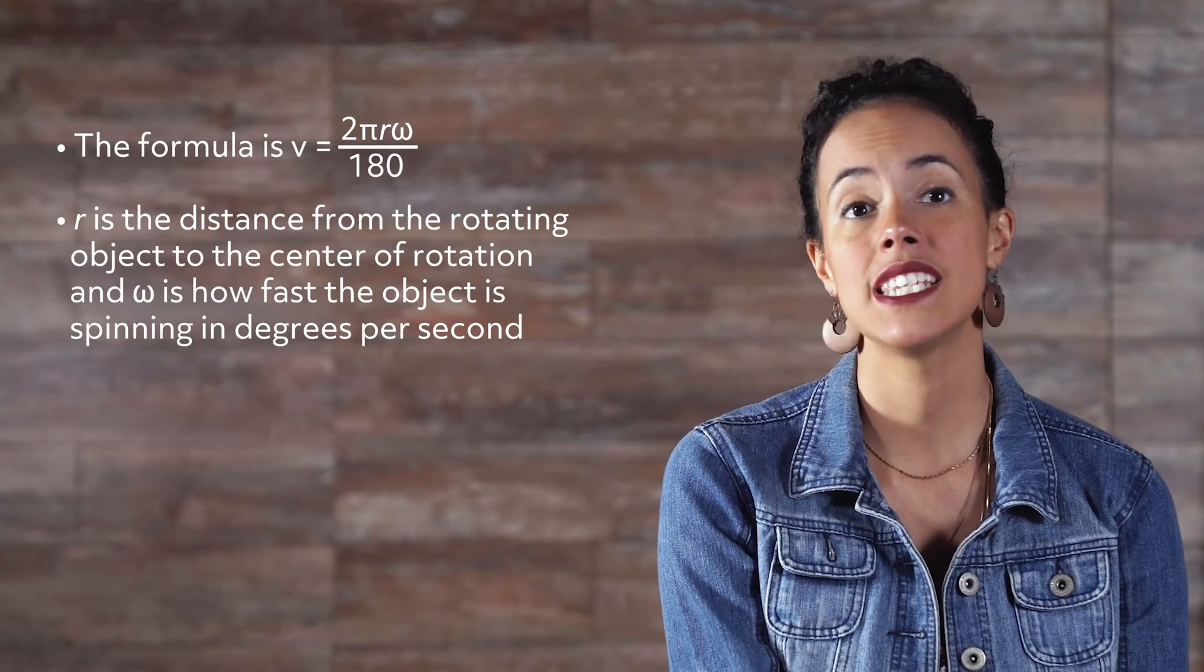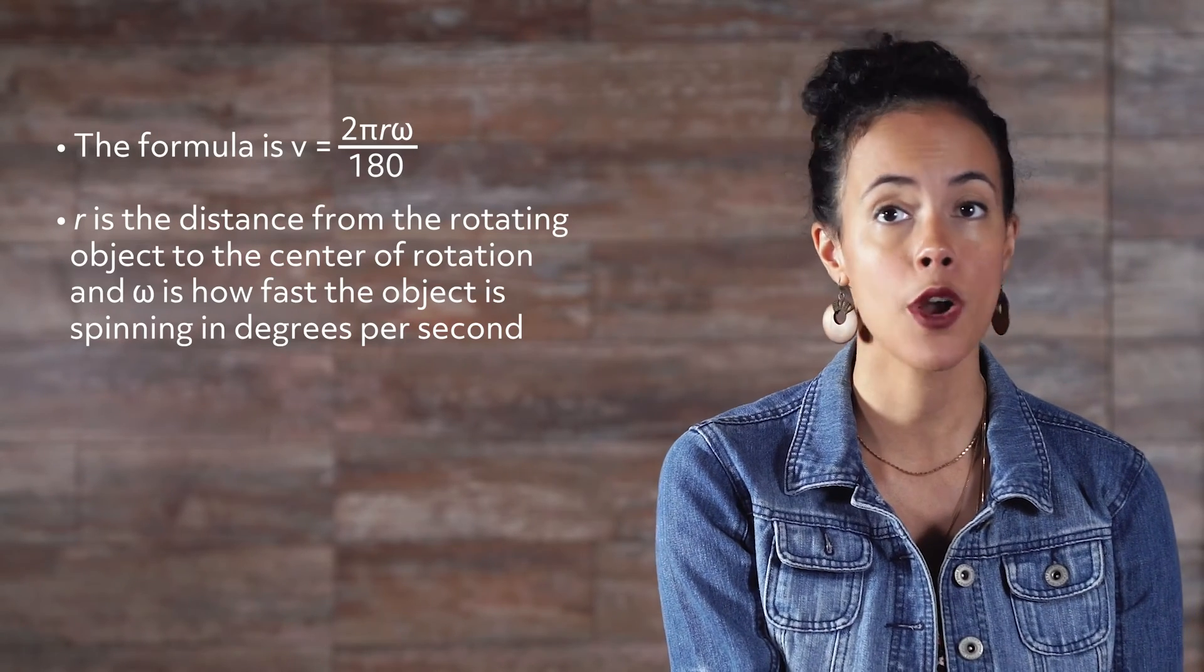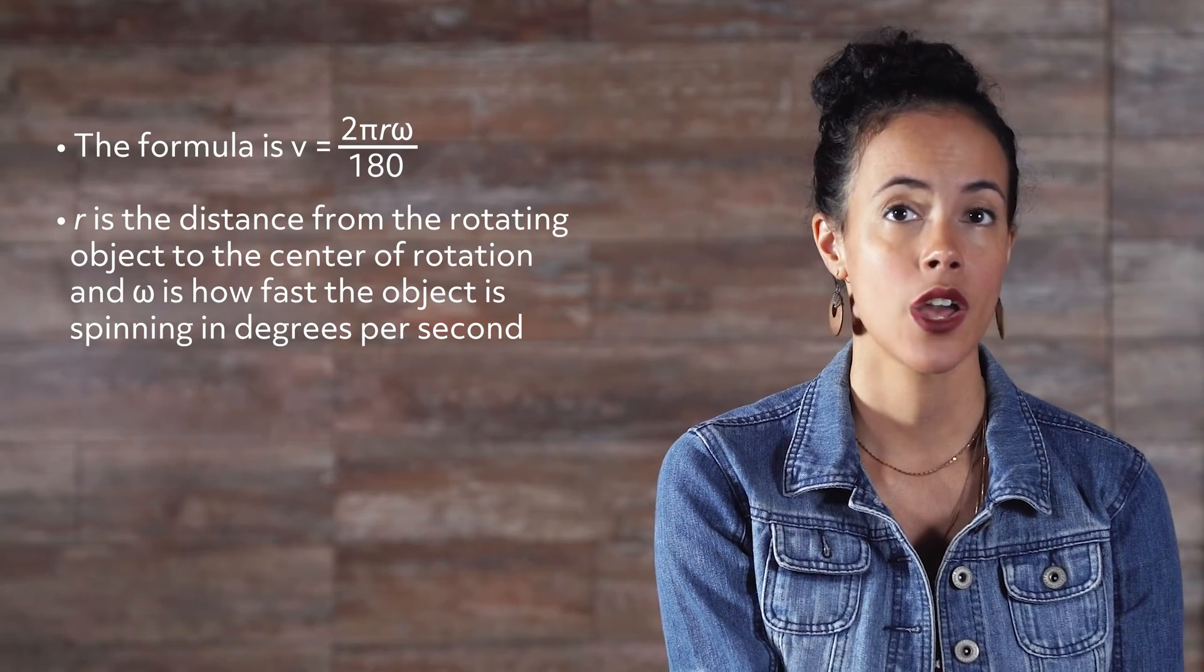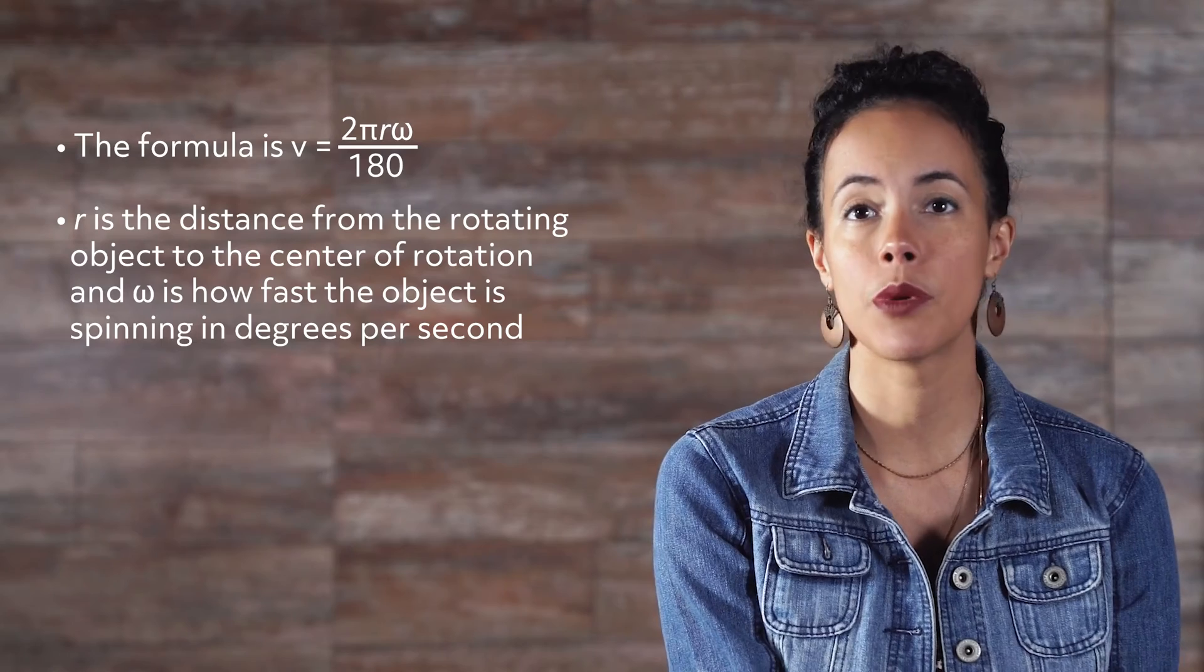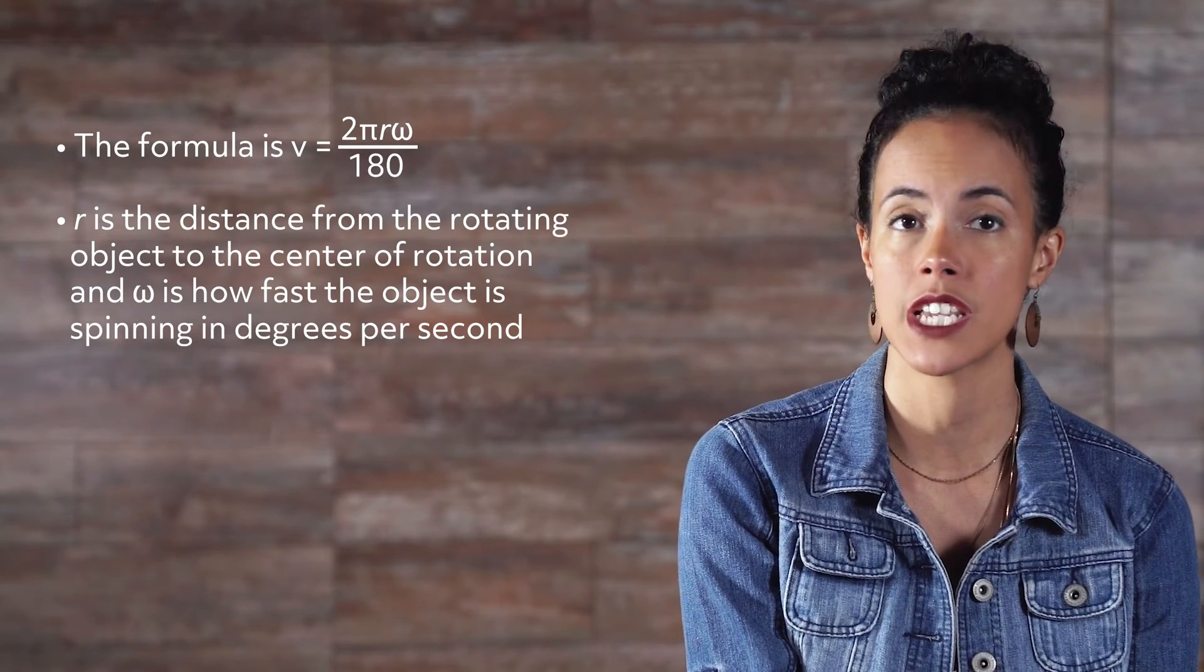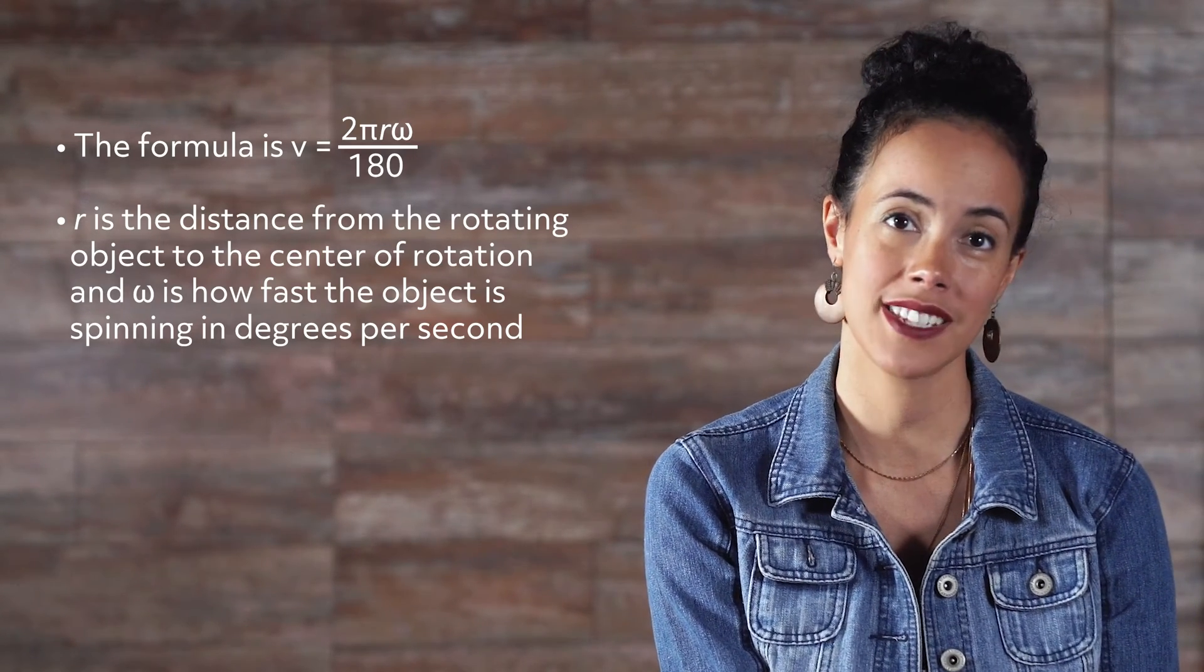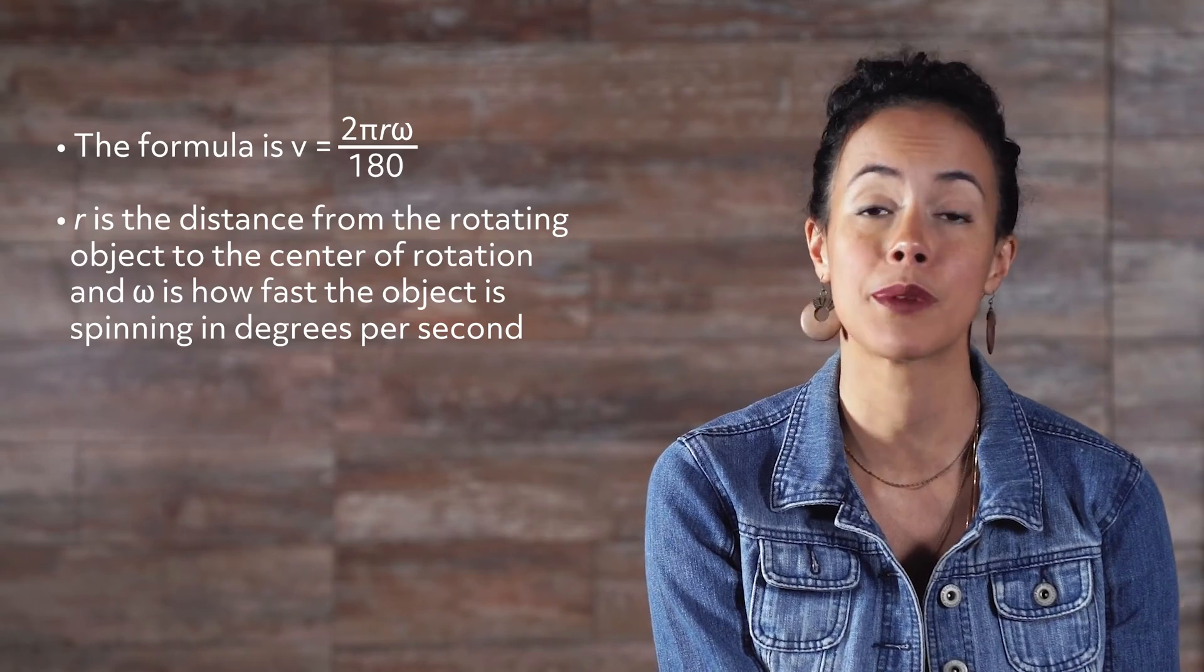In general, the formula is v equals 2 pi r omega over 180, where r is the distance from the rotating object to the center of rotation, and omega is how fast the object is spinning in degrees per second.